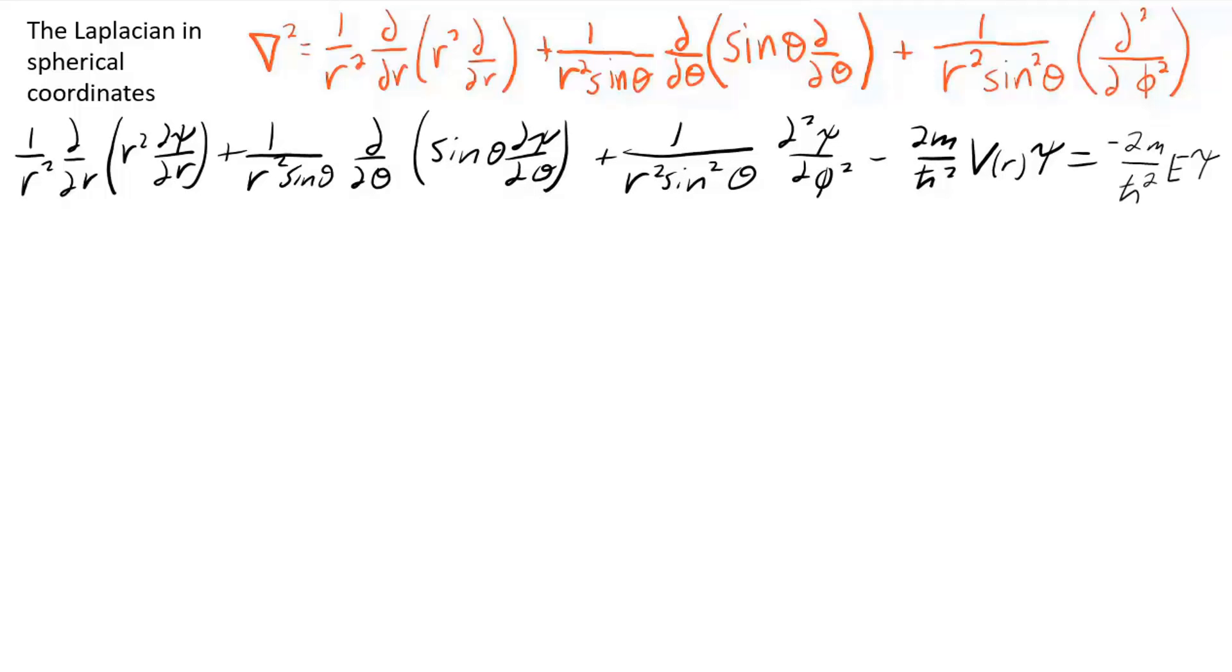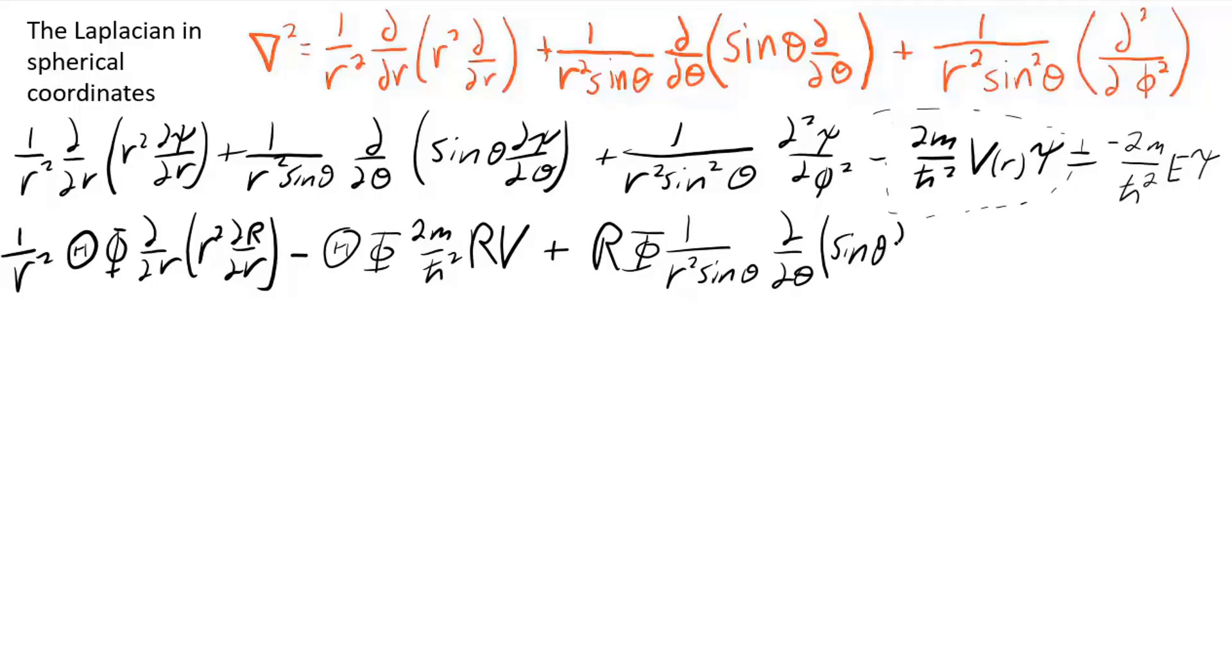Then putting in the separated wave function, you'll see I pulled the functions theta and phi out of the derivative since the R derivative doesn't operate on them. Before I go any farther, I will take this term which has potential energy in it, has all R's in it, and bring it over here. Then I'll write the terms that have theta and phi in them. Again, pulling out the R and phi part because they're not operated on by the theta differential.